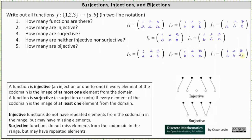And now we have all eight possible functions. For question one, how many functions are there? There are a total of eight functions because for each of the three inputs there are two possible outputs, and two times two times two is eight.